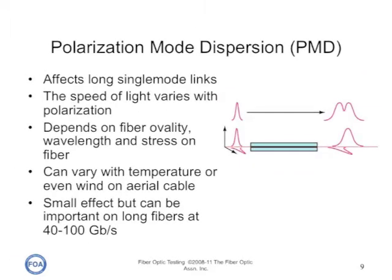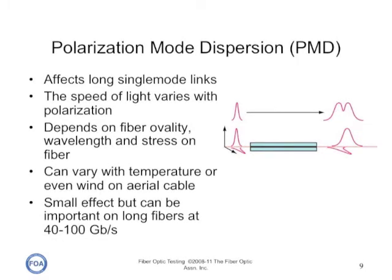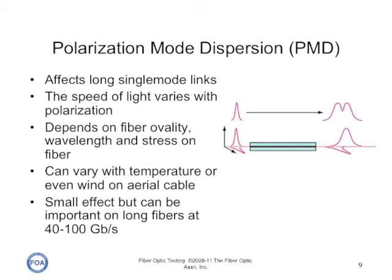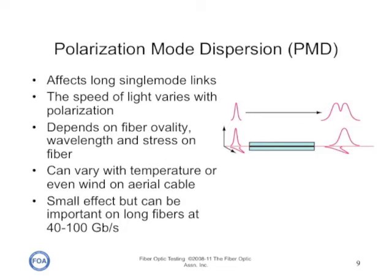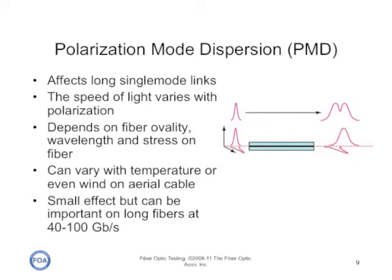Also on long single mode lengths, we worry about polarization mode dispersion. PMD is caused by the fact that the speed of light varies with polarization, and the polarization depends on the fiber ovality, frequency, the wavelengths, and stress on the fiber. The latter is a particularly troublesome problem in field measurements, because the polarization can vary with temperature or even wind stress on aerial cables. It's really a small effect, but it can be very important on long lengths at 40 to 100 gigabits per second.